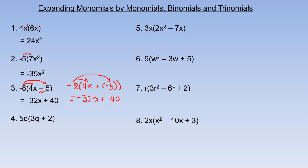Next, in number 4, we distribute the 5q into the brackets. So 5q times 3q is 15q squared — a q times a q gives q squared. And 5q times 2: 5 times 2 is 10, and there's a single q in that product, so it's 10q.